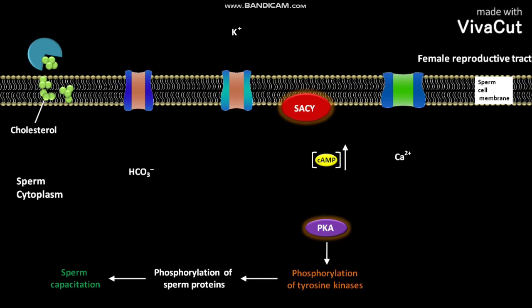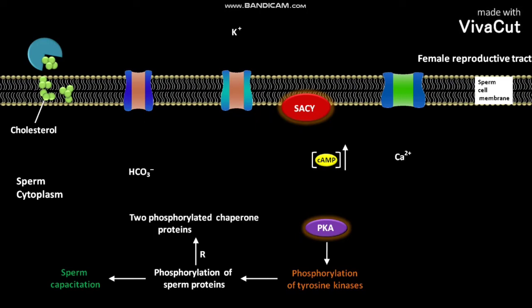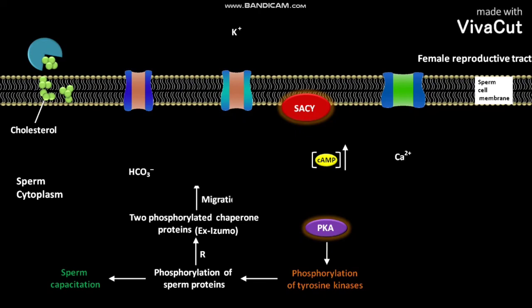The phosphorylation of sperm proteins produces two phosphorylated chaperone proteins. One of the two chaperone proteins is Izumo, which is important in sperm-egg fusion. The two phosphorylated chaperone proteins migrate to the surface of the sperm head.